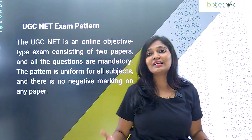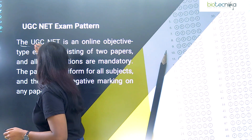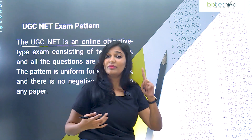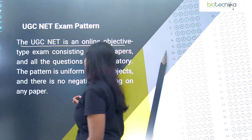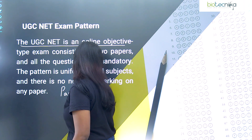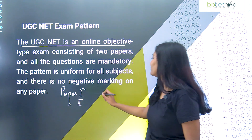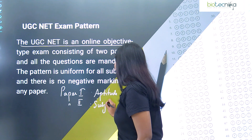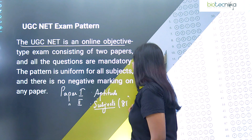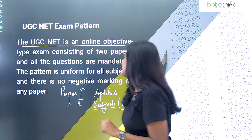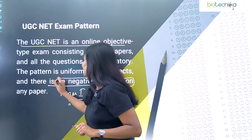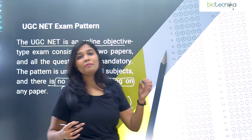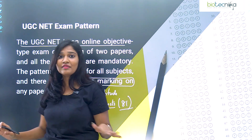Now we are going to talk about UGC NET exam pattern. Both CSIR NET and UGC NET exams are CBT — computer-based tests, online objective tests. Very important: in CSIR NET there is one paper, but UGC NET has two papers — Paper 1 and Paper 2. Paper 1 mainly relies on aptitude, and Paper 2 is the subject paper. UGC conducts examinations in 81 subjects. There is no negative marking in UGC NET, unlike CSIR NET which has 0.5 negative in Part A and Part B and one mark negative in Part C.